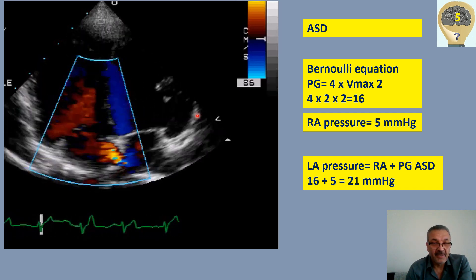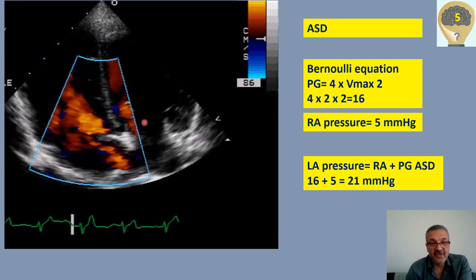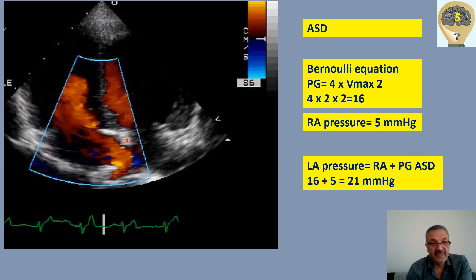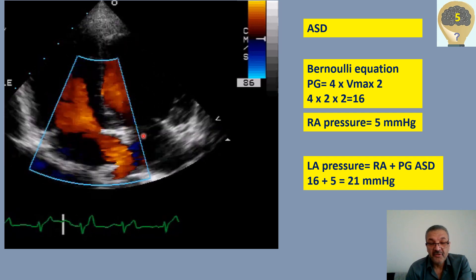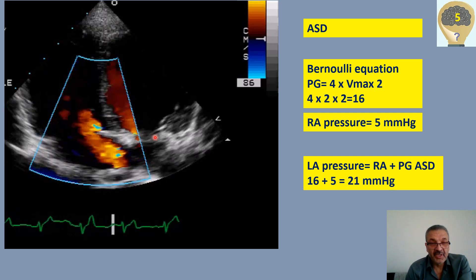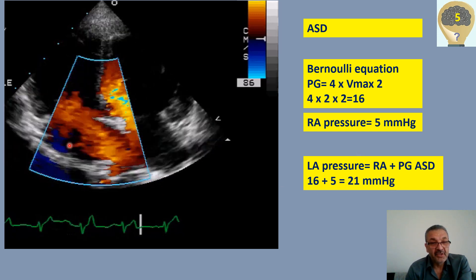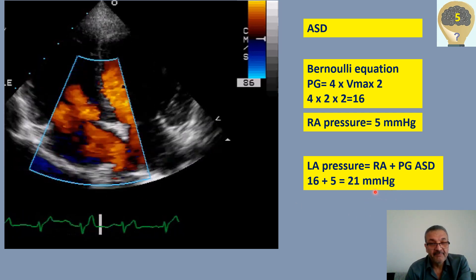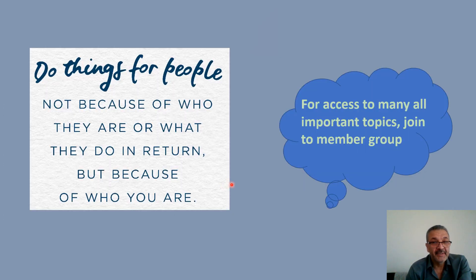For right atrial pressure, we measure the IVC. If the IVC is less than 2 centimeters and collapses more than 50%, right atrial pressure is around 5 mmHg. So left atrial pressure equals right atrial pressure plus the pressure gradient: 5 plus 16 equals 21 mmHg. I hope you liked it — don't forget to comment, and have a wonderful day!